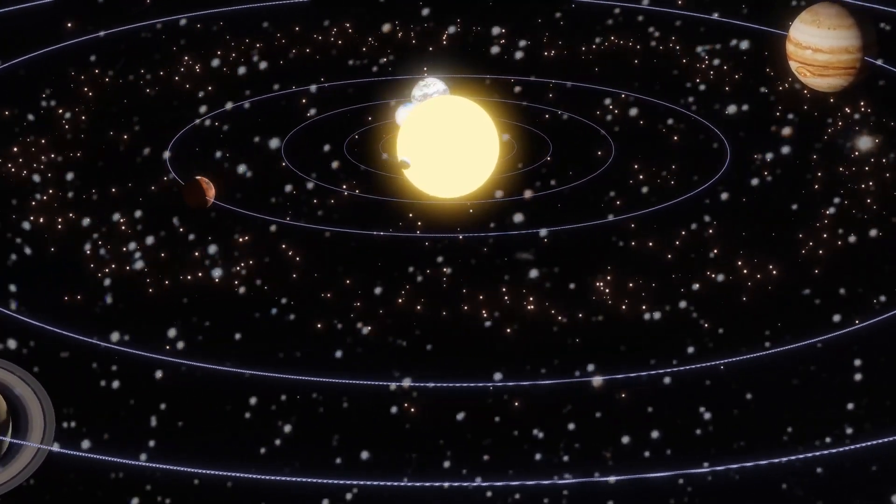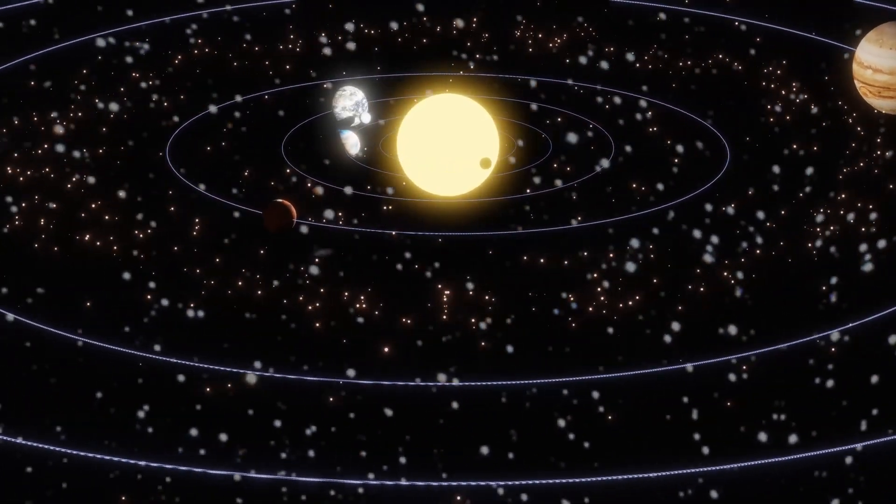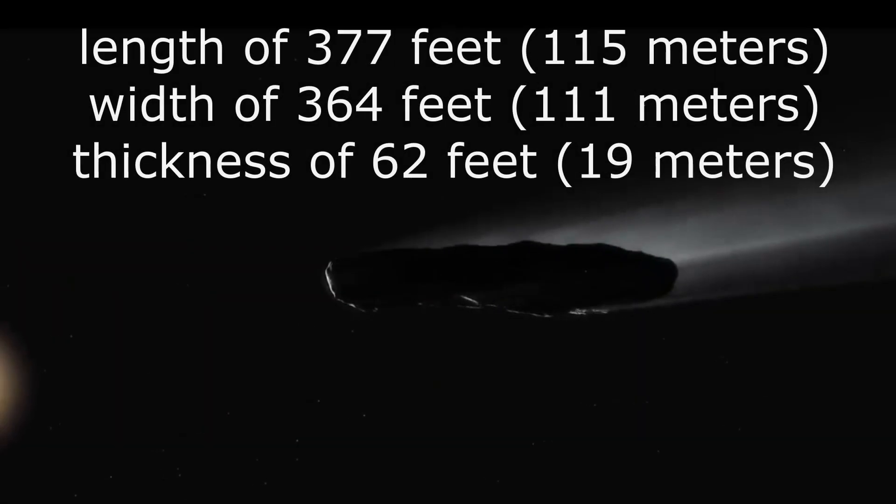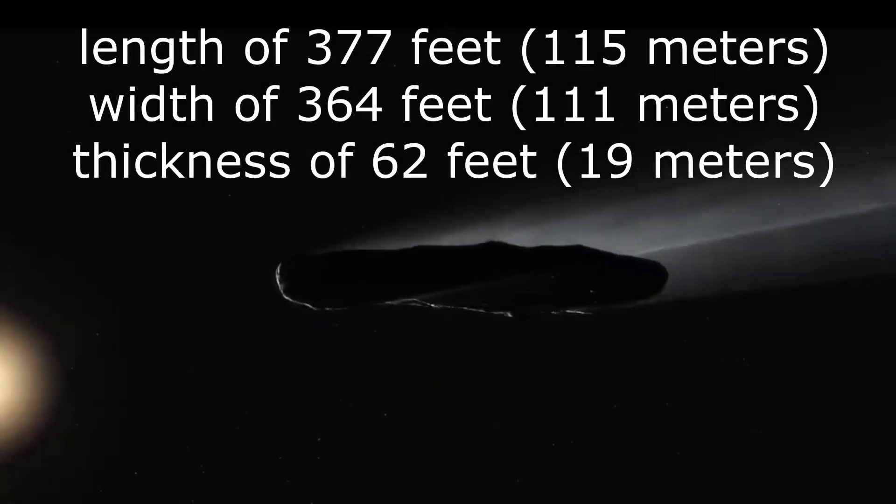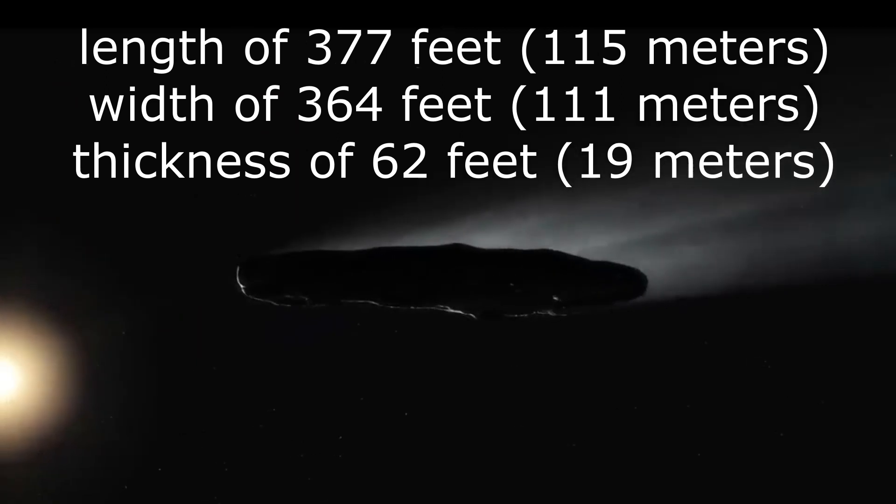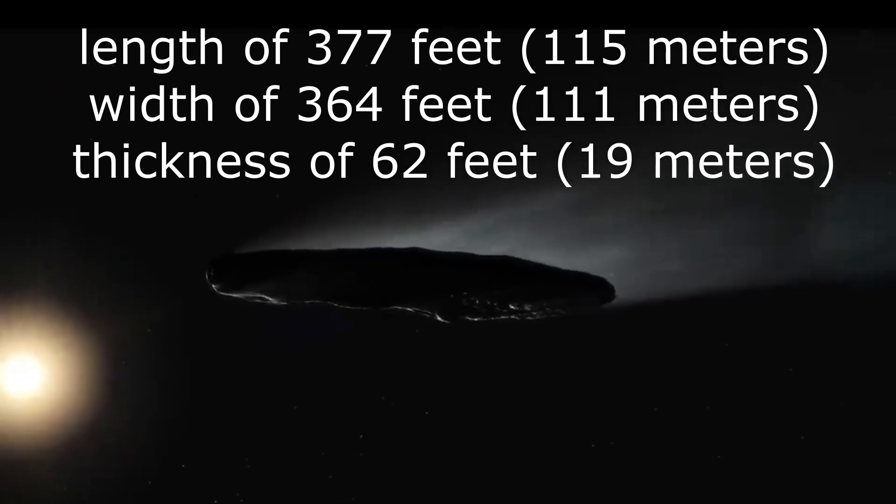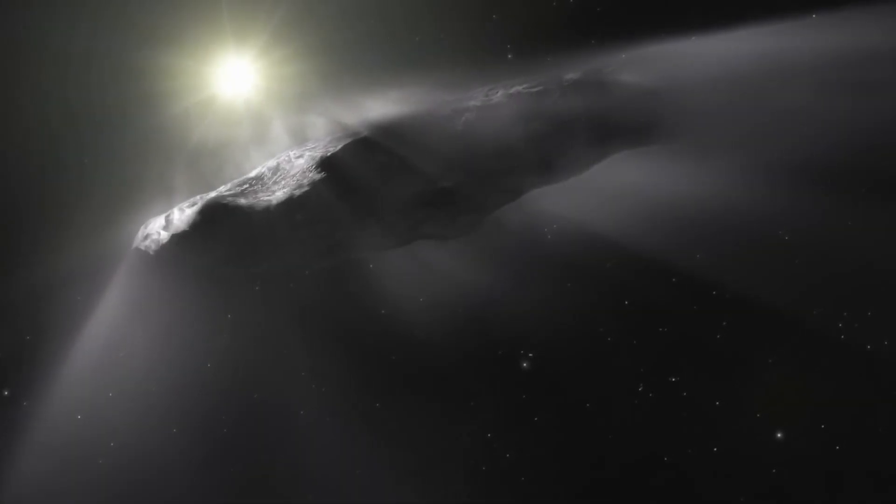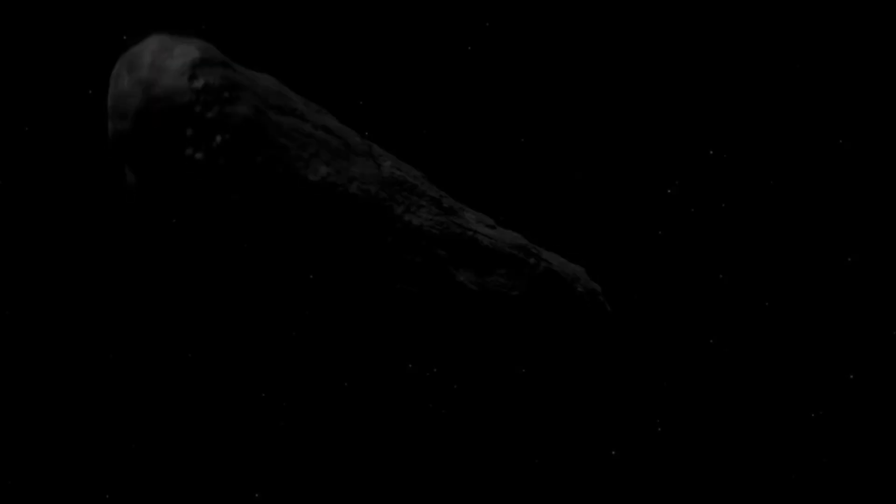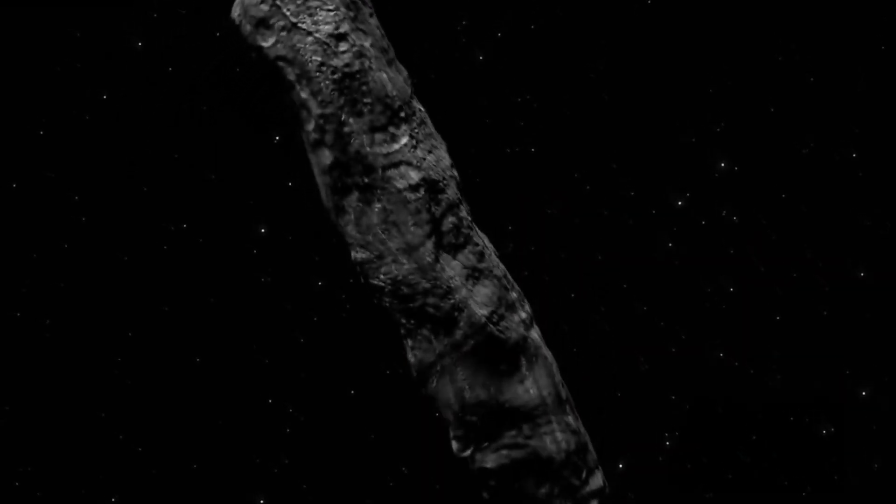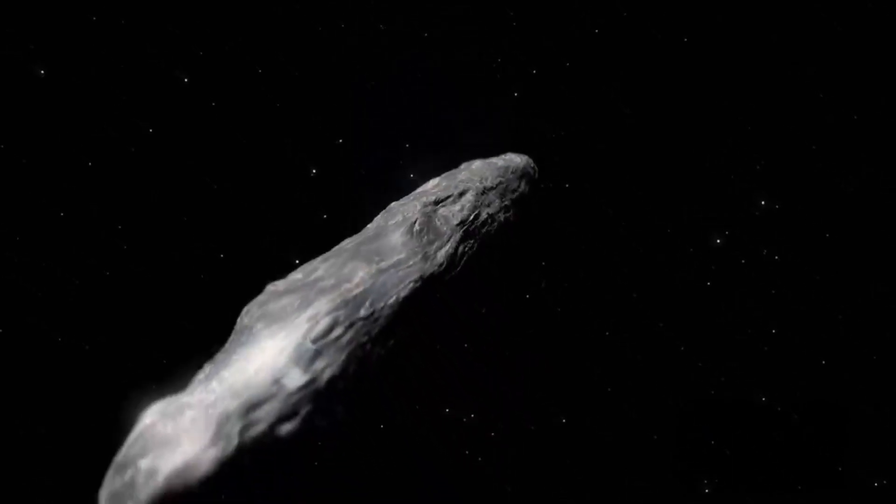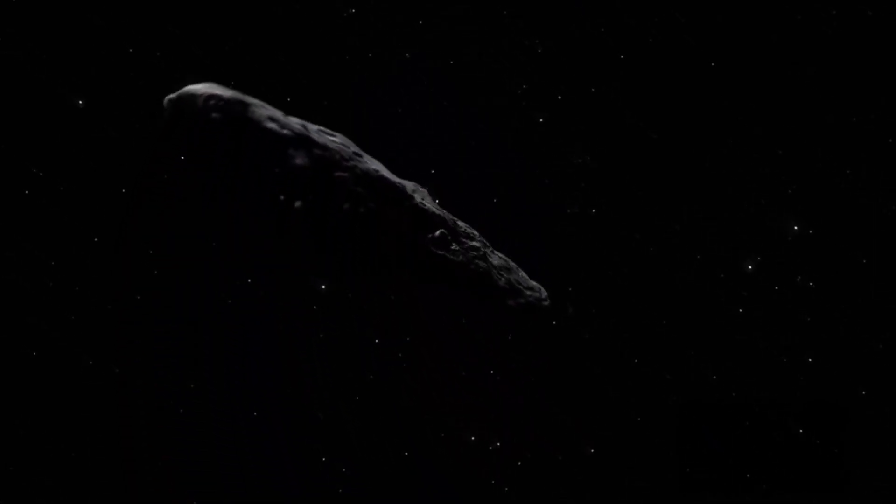The dimensions of Oumuamua were determined to be relatively small, with an estimated length of 377 feet (115 meters), width of 364 feet (111 meters), and thickness of 62 feet (19 meters). These measurements were derived from its albedo of 0.1, indicating that it reflected approximately 10% of the incident sunlight, a value commonly observed in cometary nuclei.